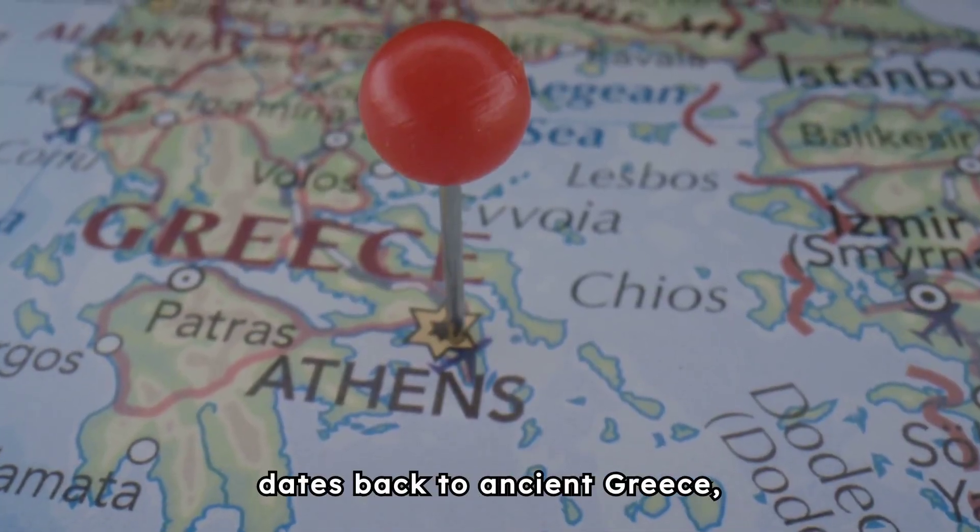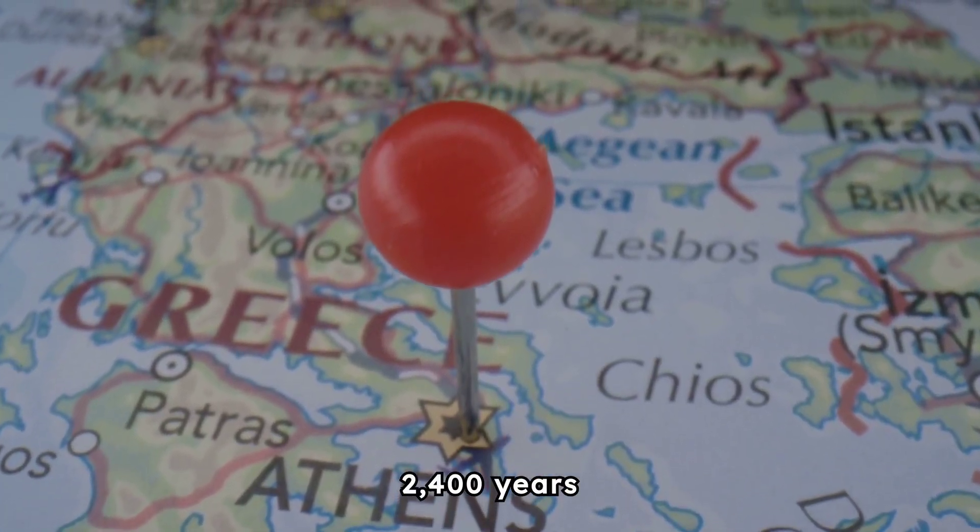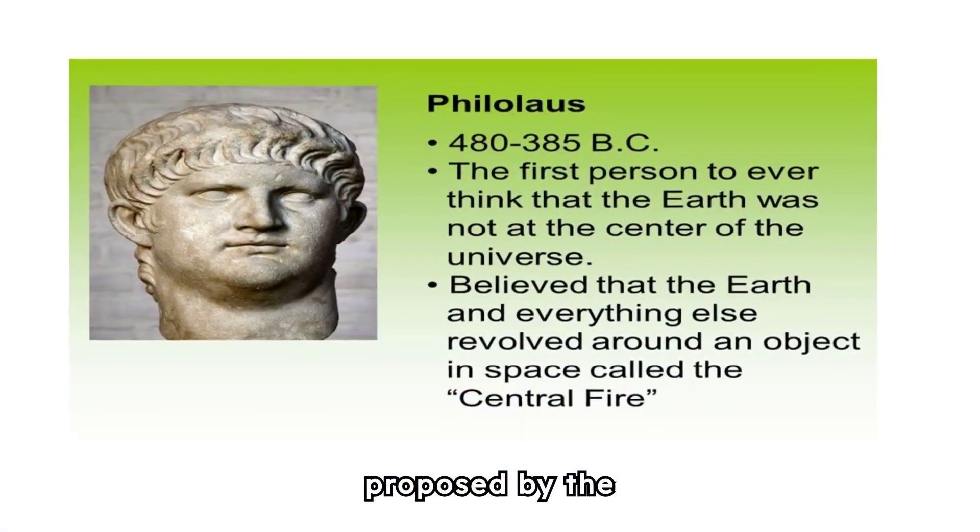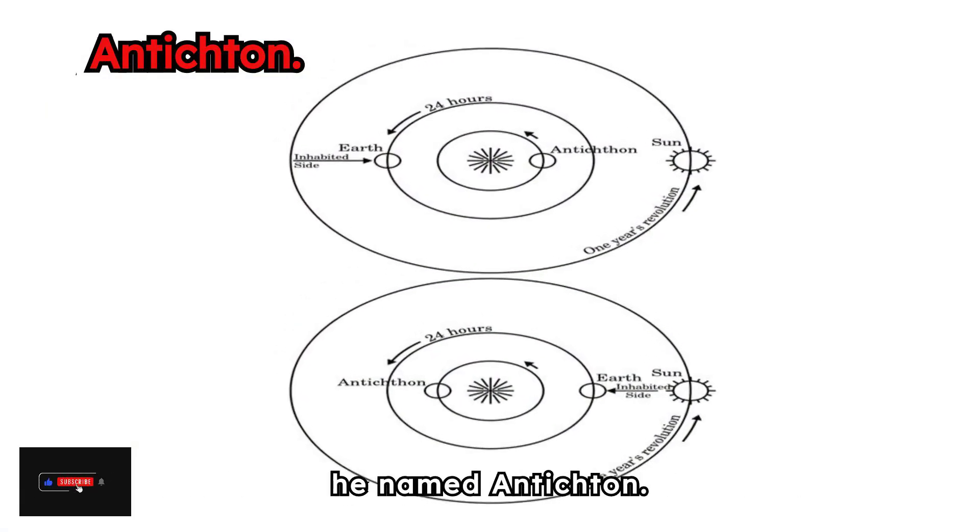The Counter-Earth Theory dates back to Ancient Greece, approximately 2,400 years ago, proposed by the philosopher Philolaus. He introduced the idea of a Counter-Earth, which he named Antikthon.